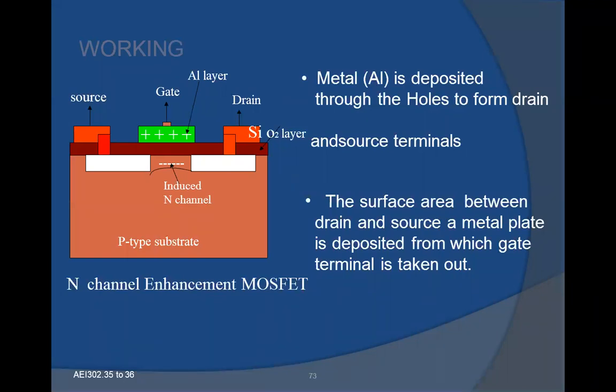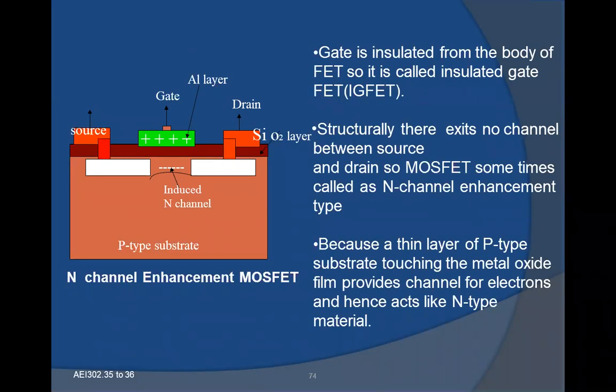Metal is deposited through the holes to form the drain and source terminals. Between drain and source, a metal plate is deposited from which the gate terminal is taken out. The gate is insulated from the body of the FET, so it is called an insulated gate FET. Structurally, there exists no channel between source and drain, so MOSFET is sometimes called N-channel enhancement type, because a thin layer of P-type substrate touching the metal oxide film provides a channel for electrons and hence acts as N-type material.